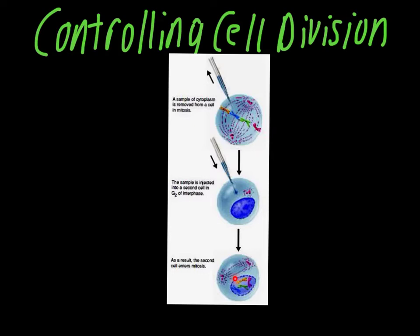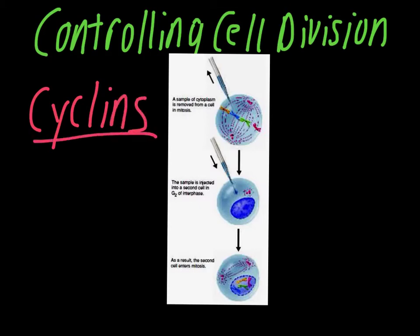They end up calling these things cyclins. It's one of those beautiful scientific names where the name kind of gives away what it does. Cyclins are these whole group of proteins that control cell division. Now the reason it's plural is there's not just one. There's many different forms of cyclins. Some of them peak and then drop off at different points during division.